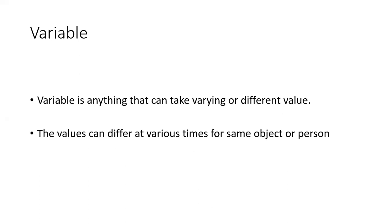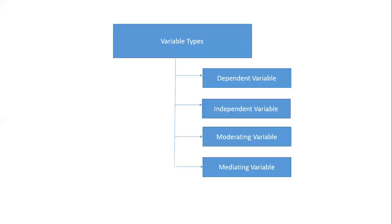Variable woh cheezein hoti hain jinki values differ karti rehti hain, constant nahin hoti hain. Same object ke liye, same person ke liye alag alag time pe value differ karti hain. Different logon ke liye bhi value same reh sakti hai. Toh variable — jab hum research mein variables ki baat karte hain.